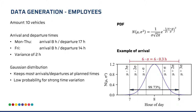In order to get comparable data for model training and evaluation, we chose distribution functions from statistics for each user group. For employees, we assume 10 vehicles which arrive usually at 8 a.m. From Monday to Thursday they depart at 5 p.m., and on Friday a little bit earlier at 2 p.m. There is a variance of two hours to make this more realistic. We want 99 percent of all employees to arrive within this time slot, so we use Six Sigma to represent this, with a mean of 8.